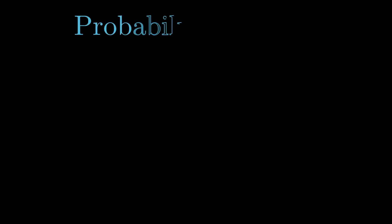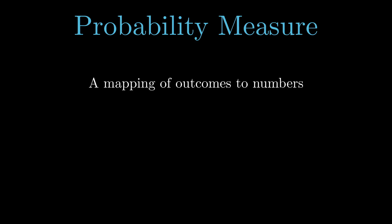Let's do a quick recap of what probability measures are. They're literally just a mapping of outcomes to different numbers. We can map heads and tails to 0.5 and 0.5, we can map them to 0.2 and 0.8, or any number between 0 and 1, as long as they add up to 1 in total.